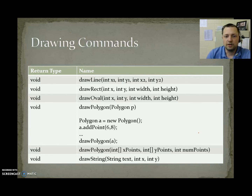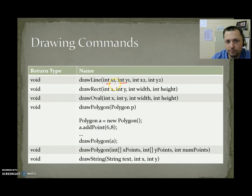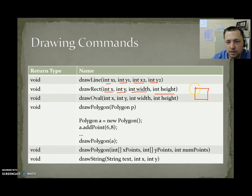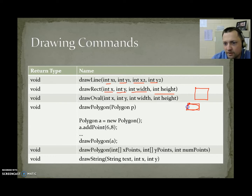Drawing commands: drawLine(x1, y1, x2, y2) draws a line from the first point to the second. drawRect(x, y, width, height) — x and y are the top-left corner of the rectangle, and width and height determine how far it extends. drawOval(x, y, width, height) works the same way — you define a rectangle with those parameters, and it draws the oval inscribed in that rectangle. It does not draw the rectangle itself.